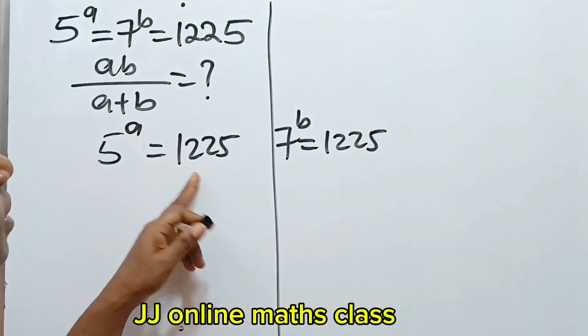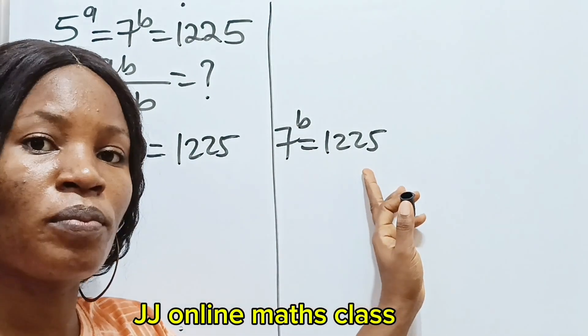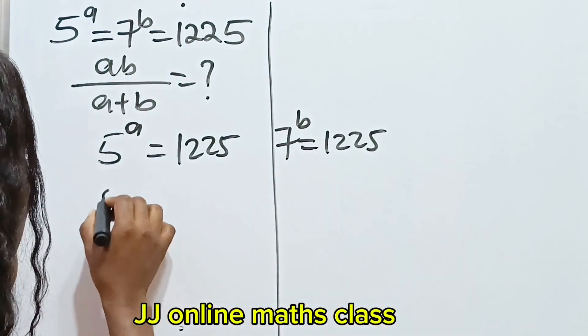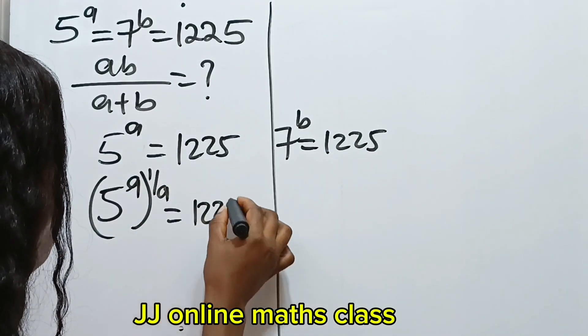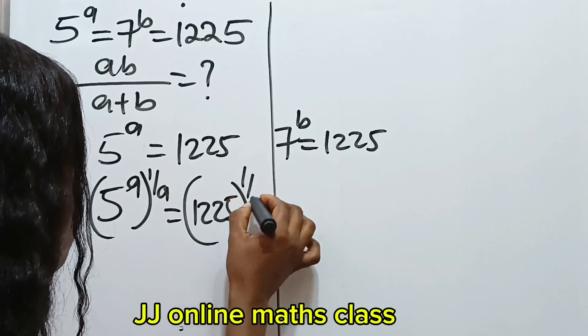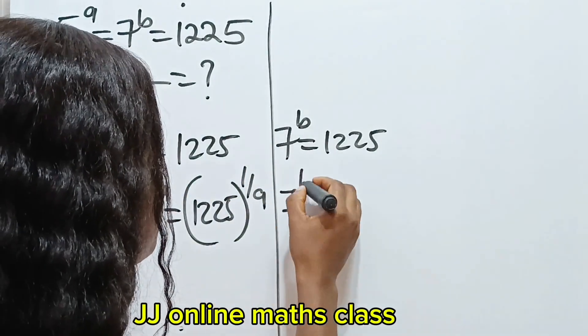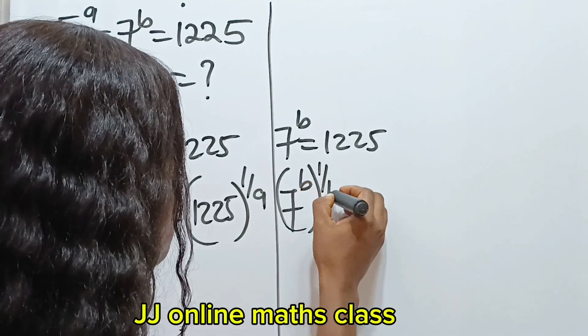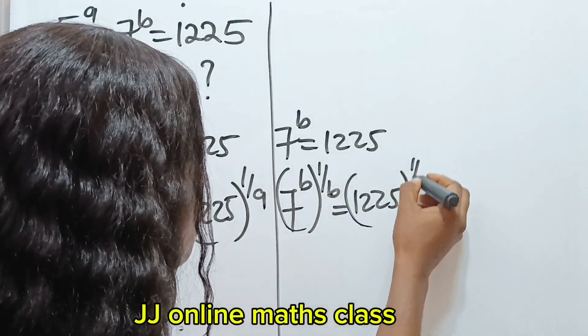Okay, so let's raise this side to the power of 1 over a and this side to the power of 1 over b. So we are going to have 5 raised to the power of a, raised to the power of 1 over a is equal to 1225 raised to the power of 1 over a. Similarly, we will have 7 raised to the power of b, raised to the power of 1 over b is equal to 1225 raised to the power of 1 over b.